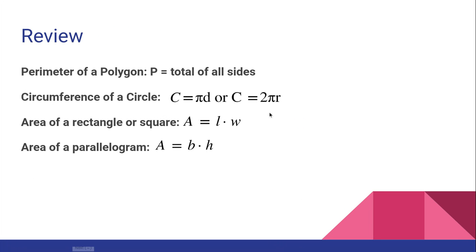So remember the circumference of the circle is C equals π times diameter. We use 3.14 for π, diameter goes all the way across, or two times π times radius and the radius just goes halfway.